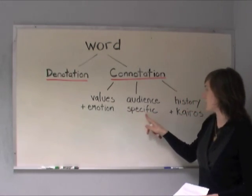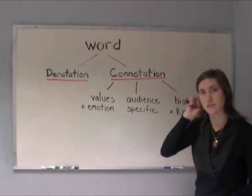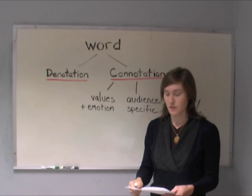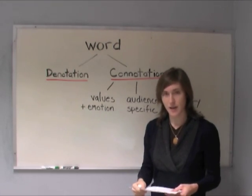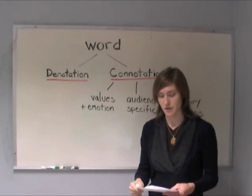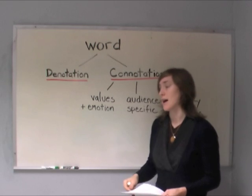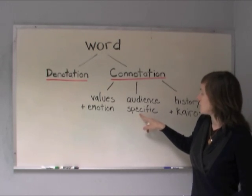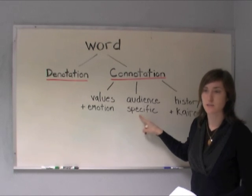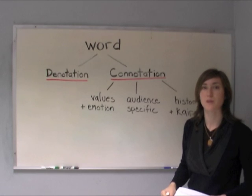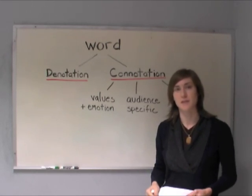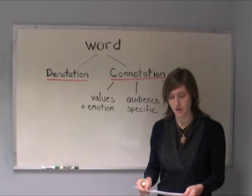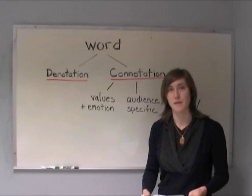Let's talk a little bit more about audience specificity. To take another example from your work on the DREAM Act, think about the word 'border.' The denotation of border is a line separating two political or geographical areas. The connotation of the word 'border' depends on the audience you're speaking to. For an audience in southern Texas, it means the Mexican-American border. But for an audience in Canada, it would be the U.S.-Canada border. So the connotation of a word depends on the audience and can even depend on their location.